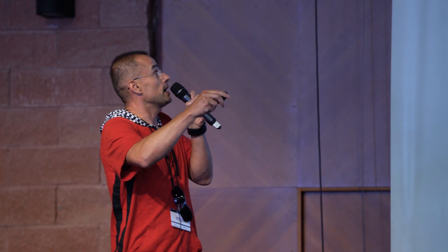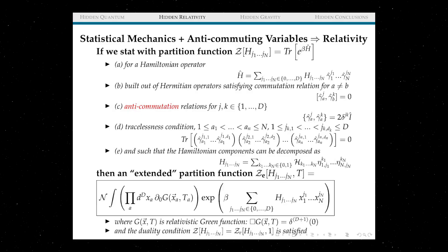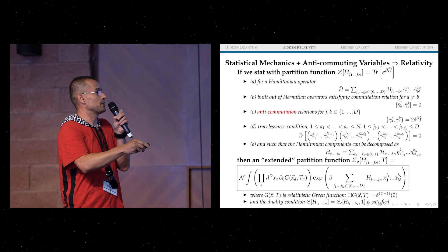And so this guy has a trace of the exponent of some complicated Hamiltonian with all those operators. These operators must satisfy not just commutation relation but also anti-commutation relations. There are some other conditions they have to satisfy.